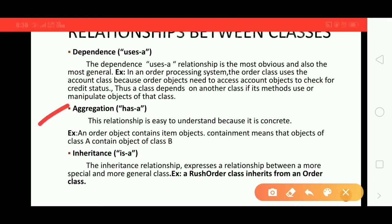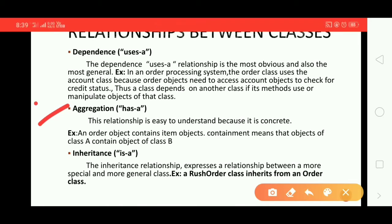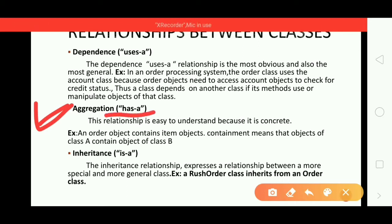Next we have aggregation. This relationship is easy to understand because it is concrete — meaning the class has complete implementation for its methods. For example, an order object contains an item object. Containment means that an object of class A contains an object of class B.